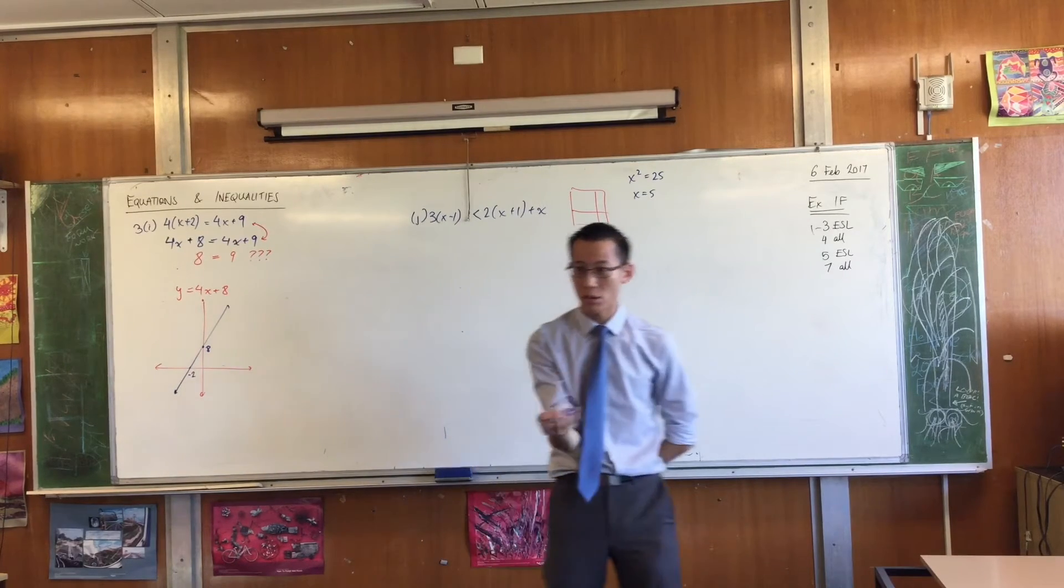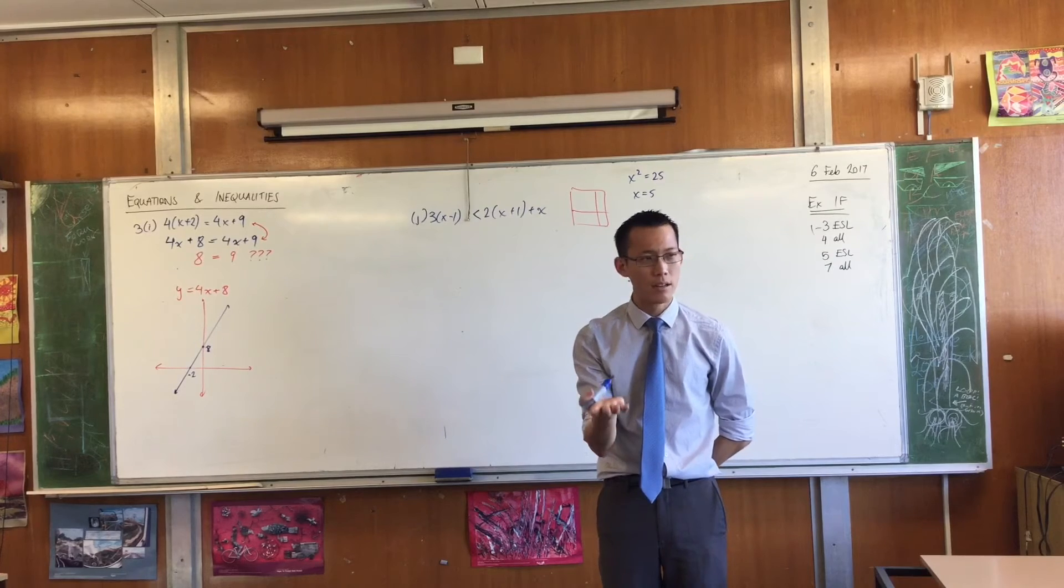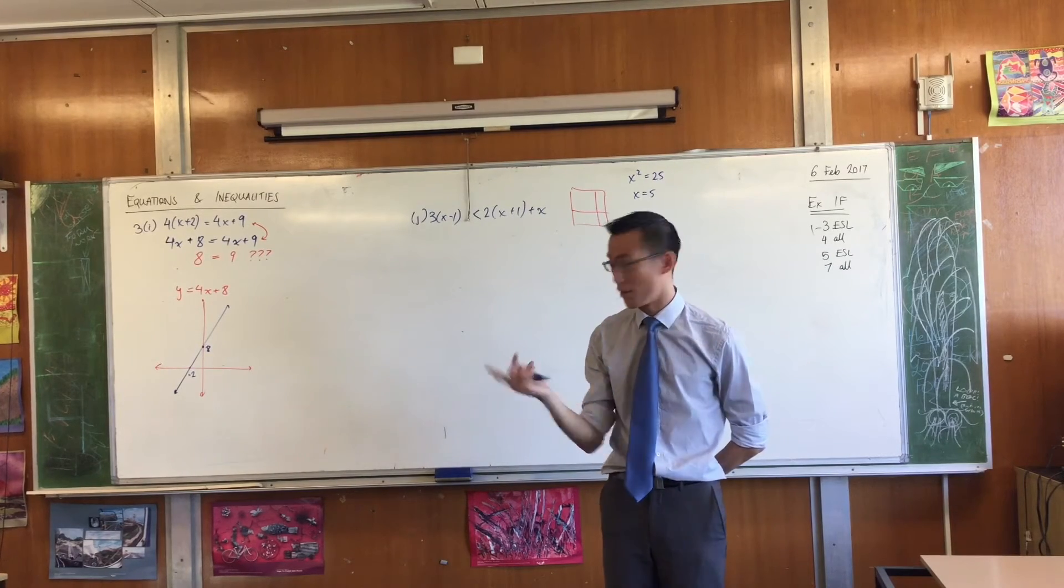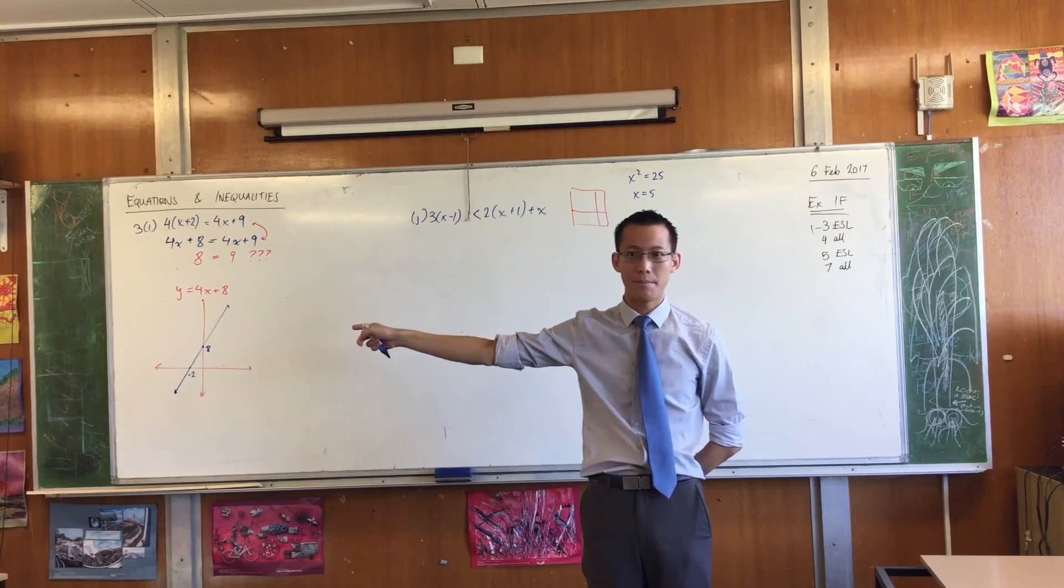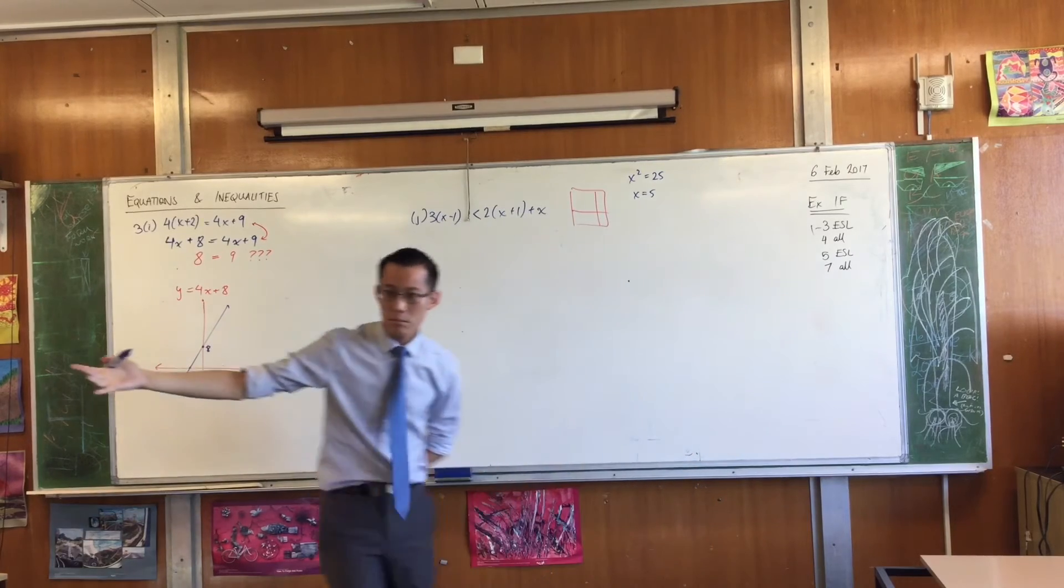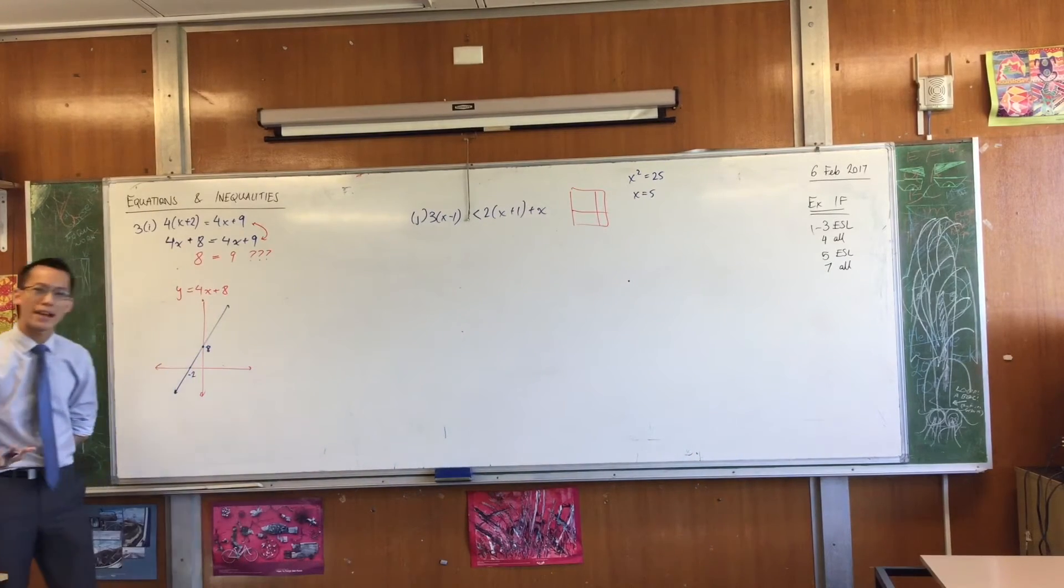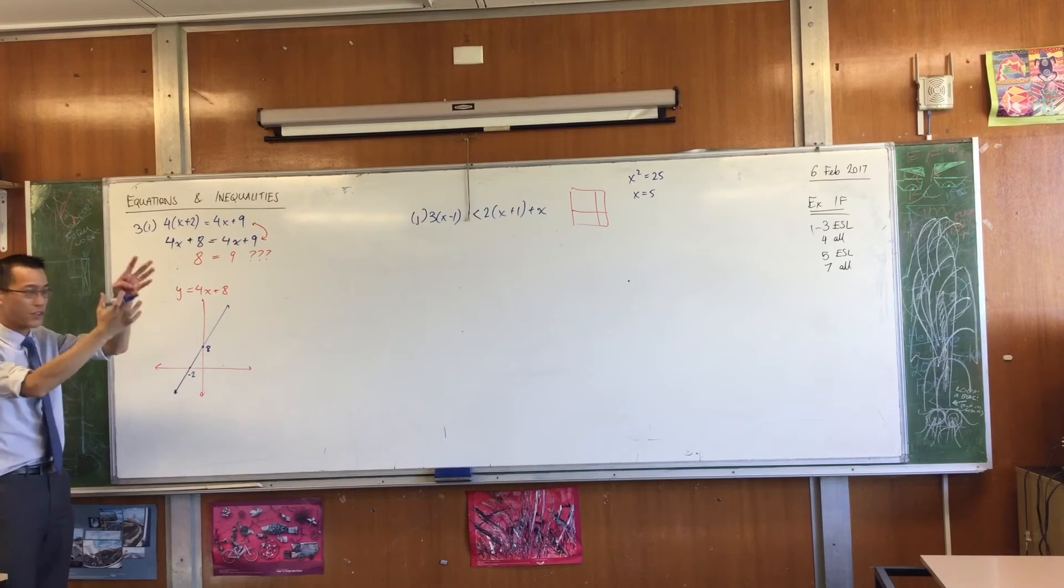Again. What's the relationship between the gradient of this line and 4x plus 9? It's the same. Right? If two lines have the same gradient, that means that they are parallel to each other. Except, there's just this difference here.